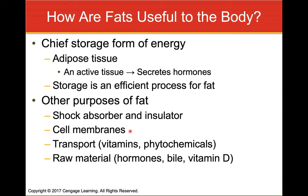Cell membranes are primarily composed of fat, so it plays an important role in the structural component of cells. In terms of transport, fat helps carry the fat-soluble vitamins A, D, E, and K, as well as certain phytochemicals with health benefits. Fat also serves as raw material for compounds like hormones such as testosterone and estrogen, for the production of bile — important for digestion and absorption of fat — and for vitamin D, which can be produced inside the body.